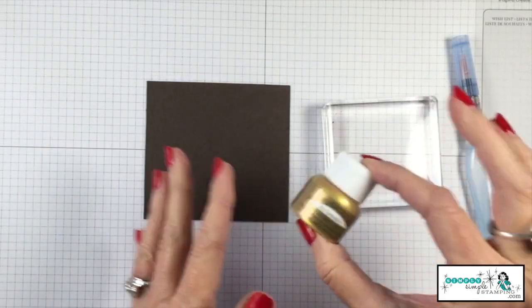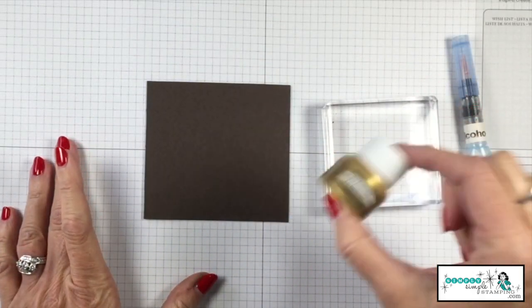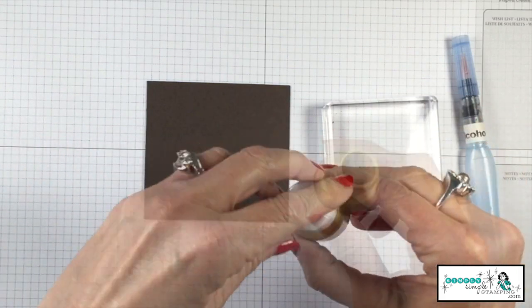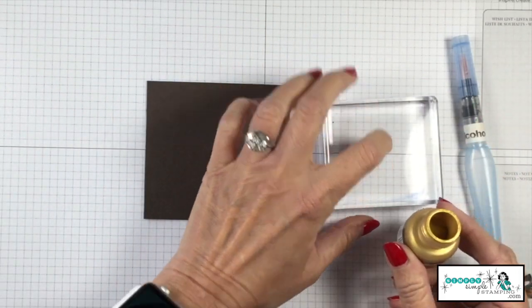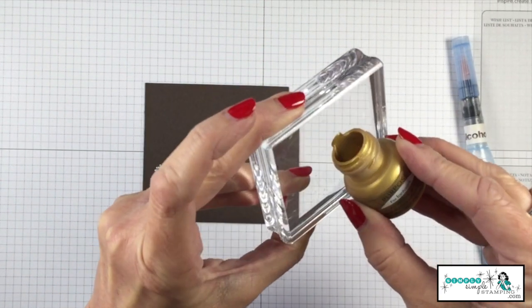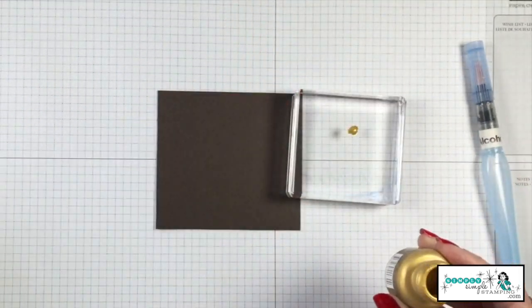The first thing we need to do is to shake the shimmer paint. There's a little ball inside there that's making sure all that shimmer gets mixed well. And what I want to do is I want to put just a dot here on my clear block. Just a tiny, tiny little dot. Look at that.